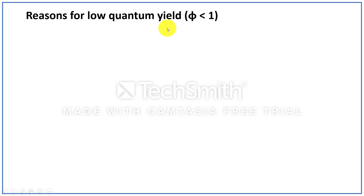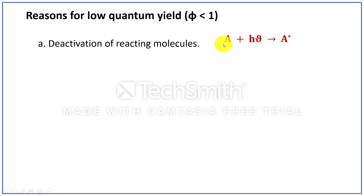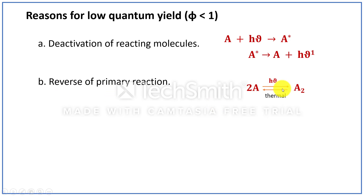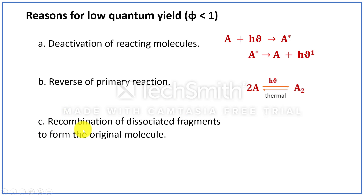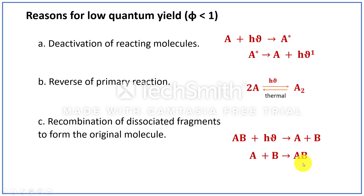Now let us see the reasons for low quantum yield or low quantum efficiency. The first reason may be due to the deactivation of reactant molecules. The reactant molecule is activated by the absorption of one photon, but this activated molecule may be deactivated due to loss of energy by colliding with other reactant molecules or by the phenomena known as fluorescence or phosphorescence. The next reason may be due to the reversal of the primary reaction, so that reactant molecules return to their original state. The third reason is recombination of dissociated fragments to form the original molecule. The reactant molecule decomposes to give product, and the product recombines to give back the reactant. In such cases, the quantum efficiency will be very low.